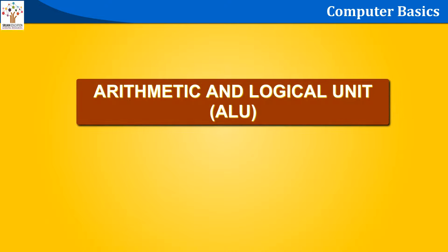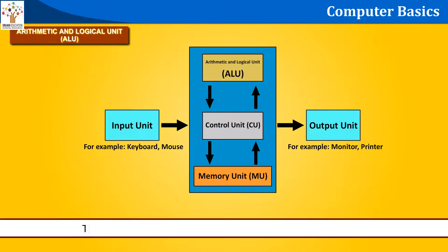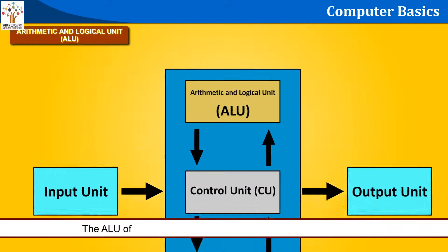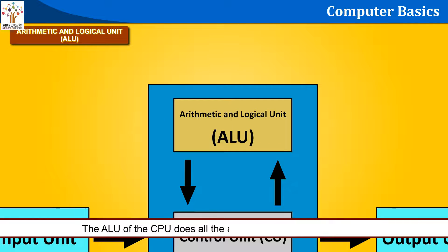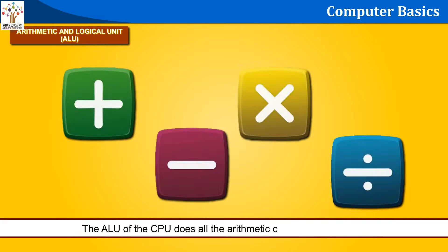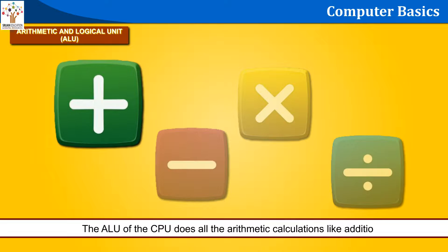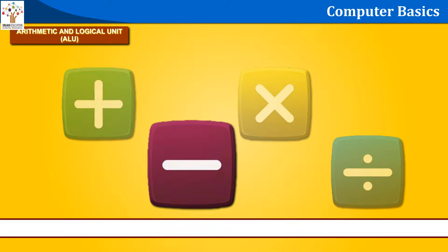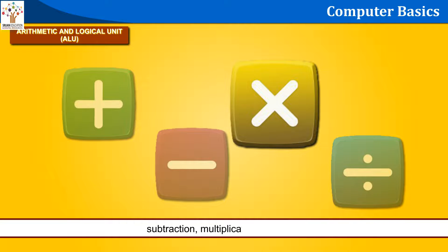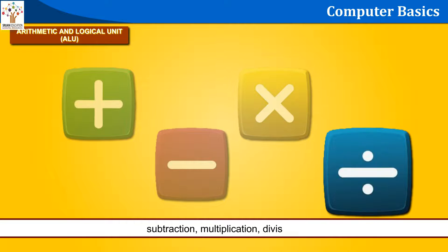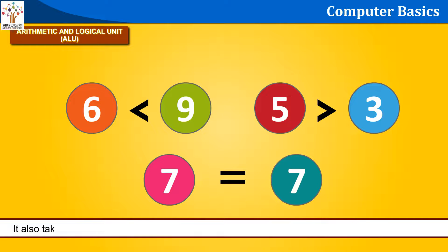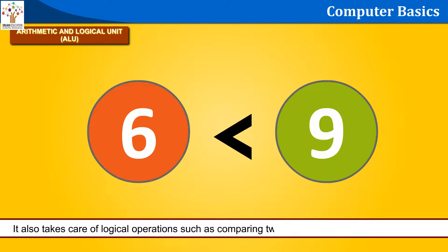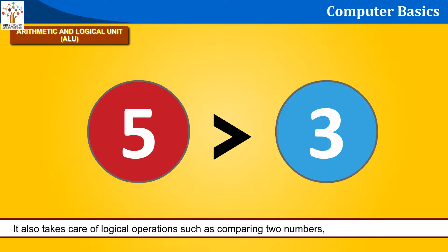Arithmetic and Logic Unit (ALU): The ALU of the CPU does all the arithmetic calculations like addition, subtraction, multiplication, division, etc. It also takes care of logical operations such as comparing two numbers, matching characters, etc.